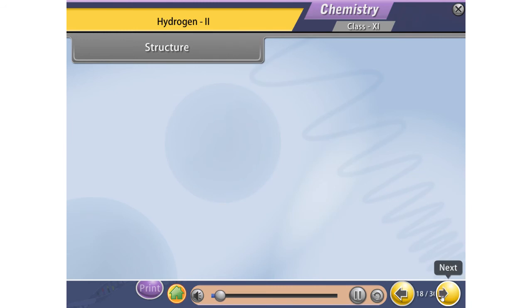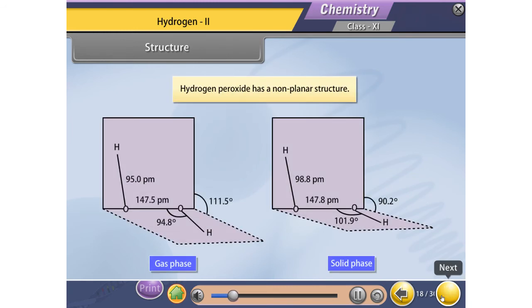Structure: Hydrogen peroxide has a non-planar structure. In gas phase, dihedral angle is 111.5 degrees. In solid phase, at 110 Kelvin, dihedral angle is 90.2 degrees.